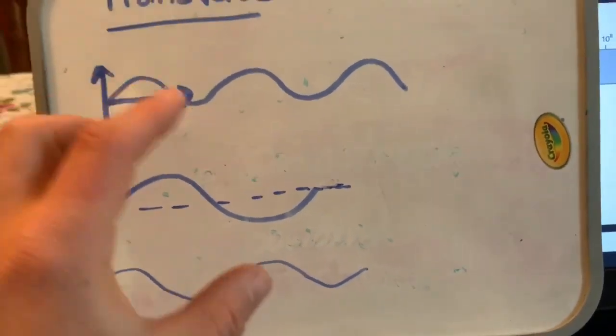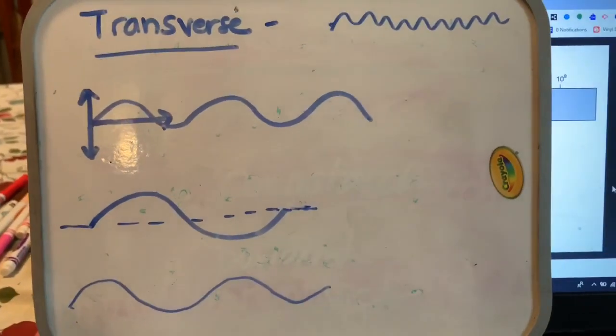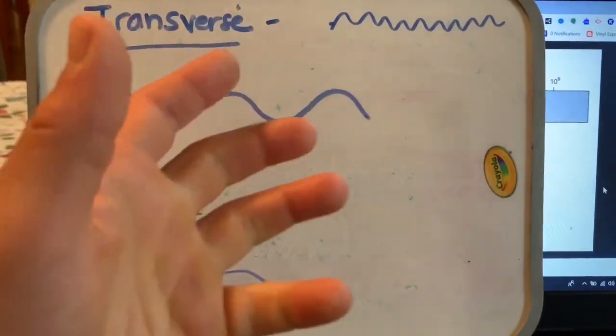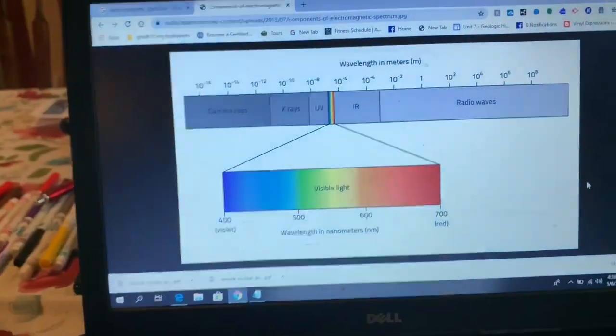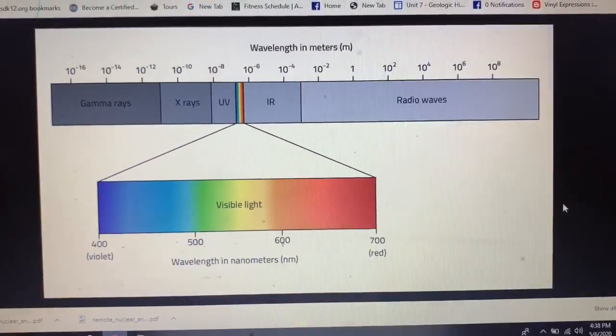When you have those multi-wave pieces, that's like the purpose of polarizing sunglasses. It pulls one of the waves out that would bother your eyes to make the light less obnoxious through your sunglasses.